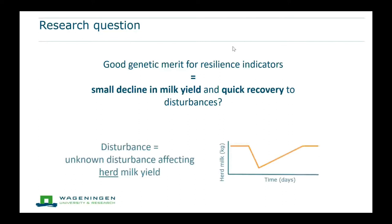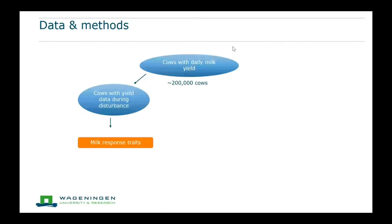To answer this, we needed a real-life disturbance. We chose an unknown disturbance affecting the herd milk yield. When you look at the average milk yield of all cows in a herd over time and suddenly see a drop, something apparently happened to cause that drop. You don't know exactly what happened, but at least a disturbance occurred, and then you can look at how individual cows responded. We had daily milk yield data of about 200,000 cows, and from those we took the ones with yield data during the herd disturbance selected for their herd.